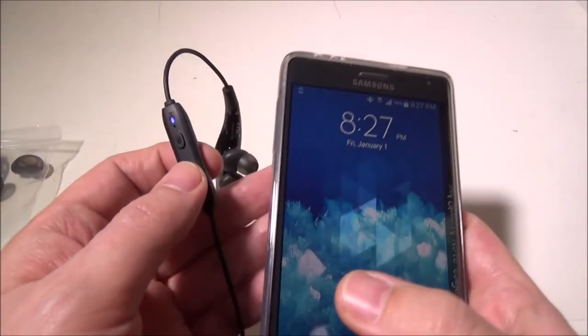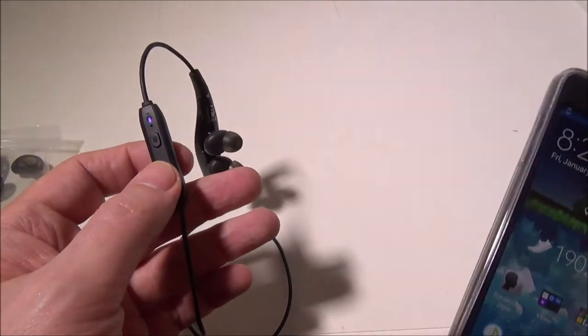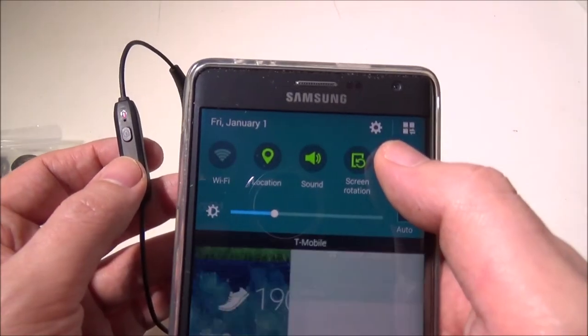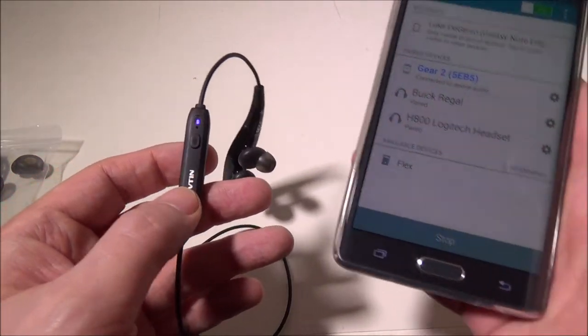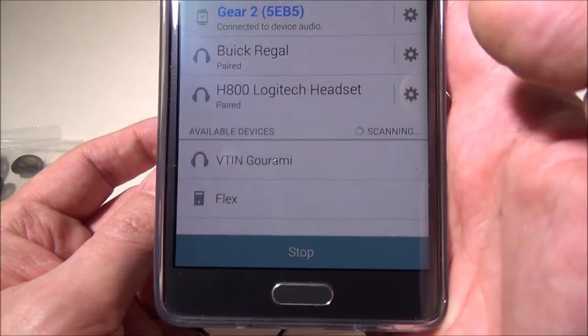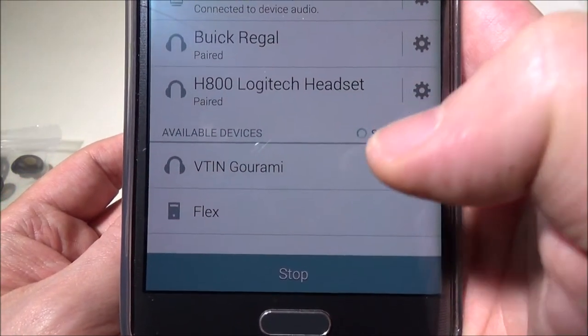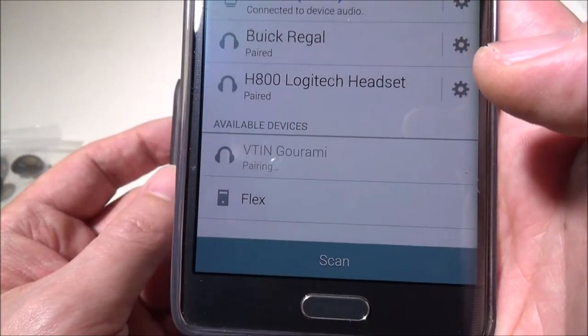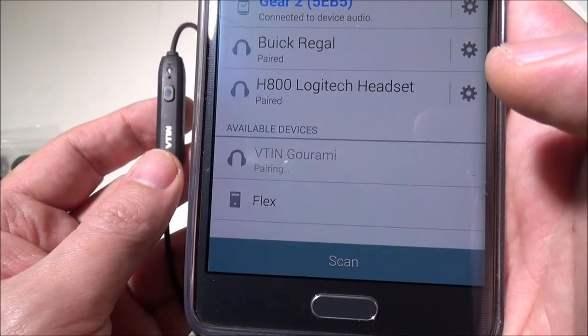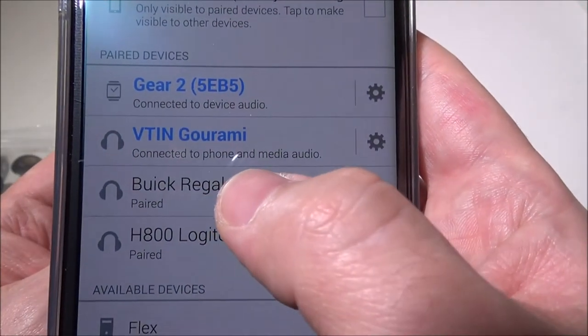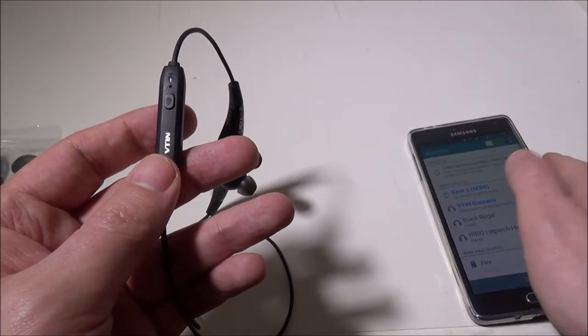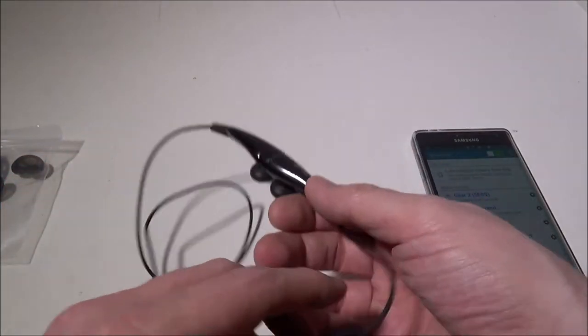Now that we're in pairing mode here, let's take our Android phone. I happen to have a Galaxy Note Edge here, so we'll go down to Bluetooth and we will scan for this guy. It comes up as the v10 Gourami, so we're going to click on that real quick and it's going to pair. Once it's paired, it's going to say connected to phone and media audio. Very simple, easy, fast pairing process.